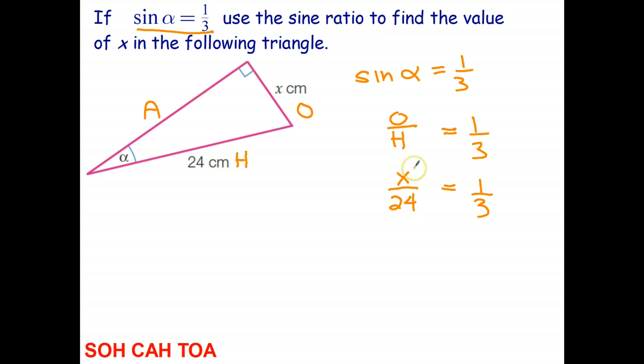So what I have here is a proportion or a linear equation to solve. Now, nothing wrong with solving this one in your head. You say, what number over 24 is equal to one-third? And the answer is 8.